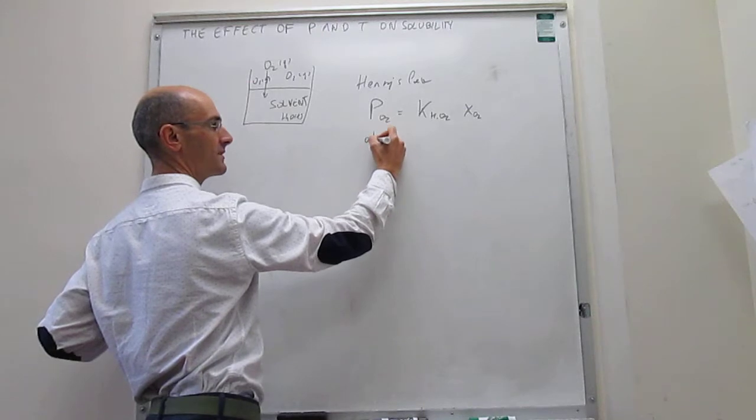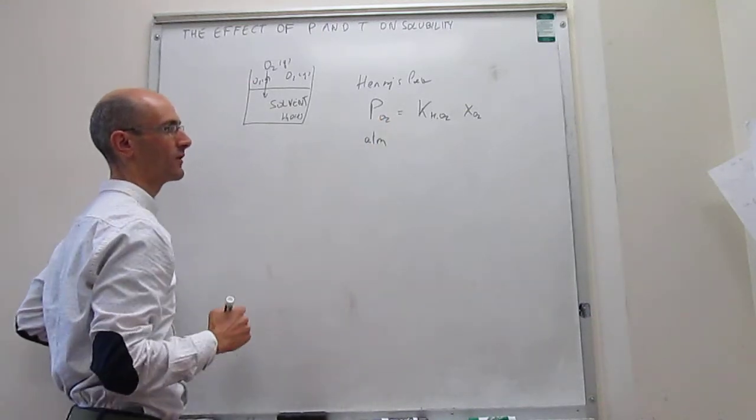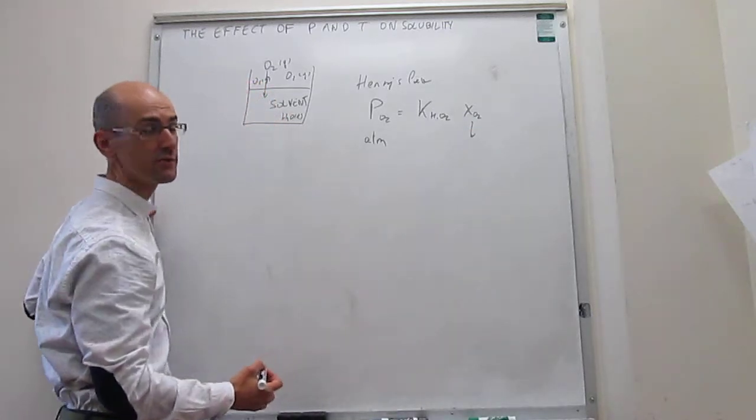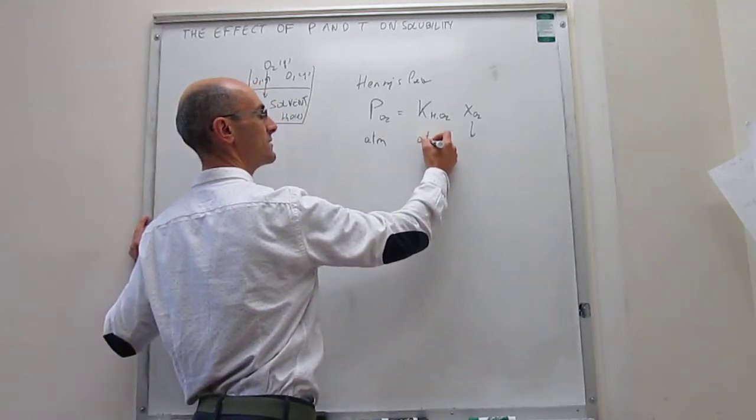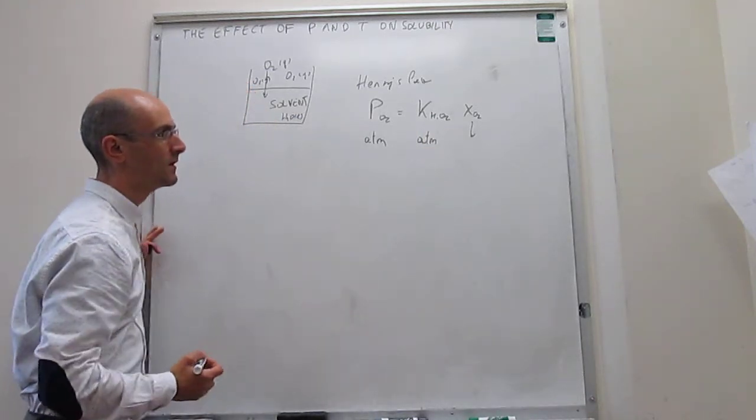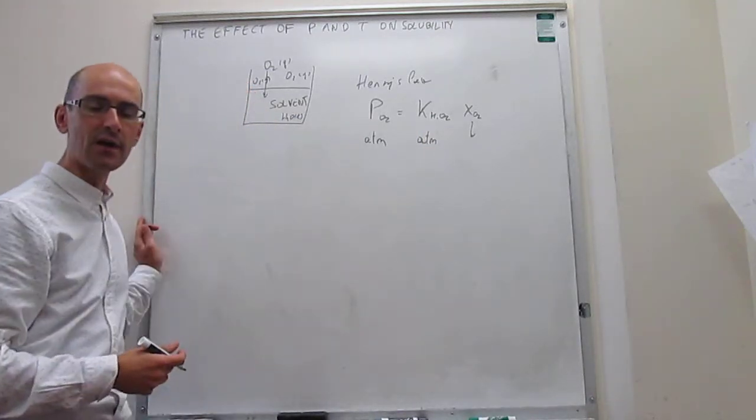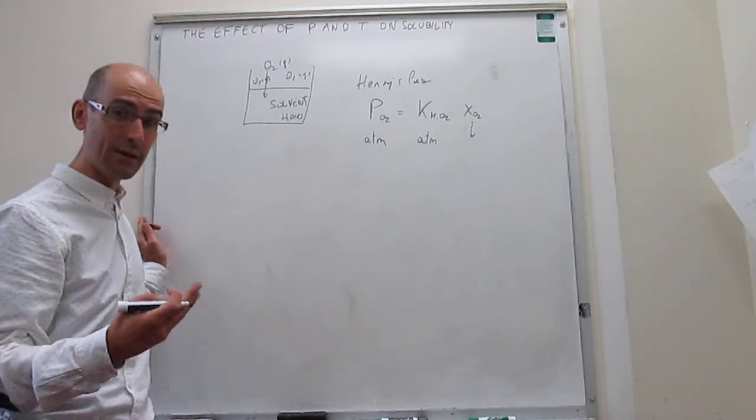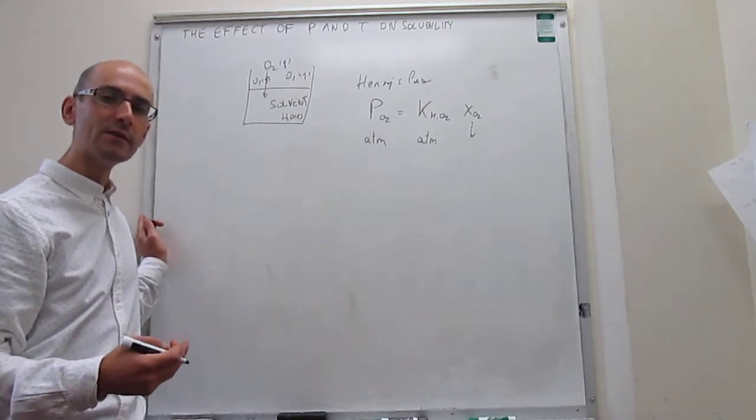If we do a unit analysis, if you put here the pressure of oxygen in atmospheres, notice that the mole fraction doesn't have any dimensions. Then this Henry's constant should also be in atmospheres. Those Henry's constants are known for various solvents. It depends on the solvent and it also depends on the solute.